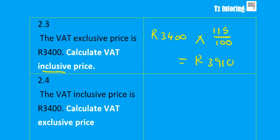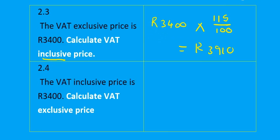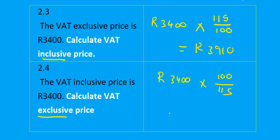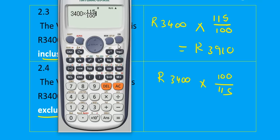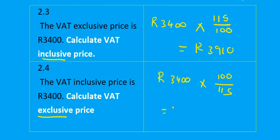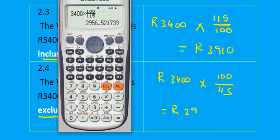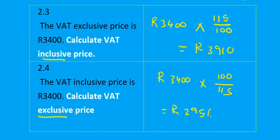For the opposite calculation, if a VAT-inclusive price is given and you must find the VAT-exclusive price, you multiply by 100/115. So if you are including VAT it is 115/100, but if you are excluding VAT it is 100/115. Working that out gives R2900.56 — approximately R2900 and 52 cents.